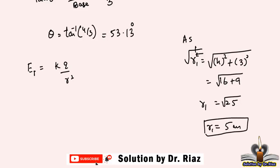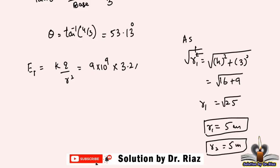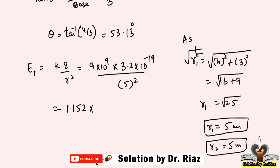So r1 is 5 meters and r2 is also 5 meters because both charges are at the same distance from the origin. Now calculating E1: E1 = (9×10⁹ × 3.2×10⁻¹⁹) / (5²) = 2.88×10⁻⁹ / 25 = 1.152×10⁻¹⁰ N/C. This is E1, and E2 is the same, so E1 = E2.